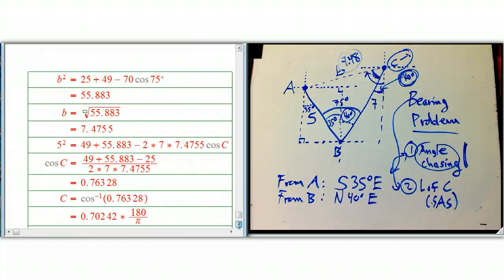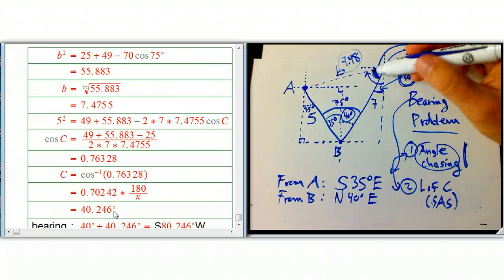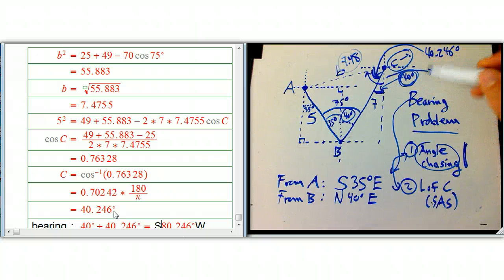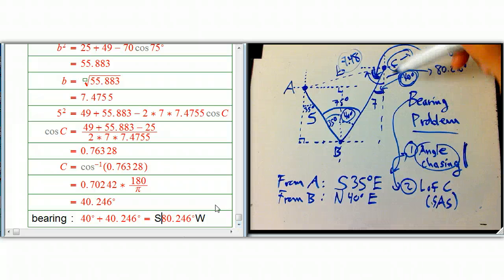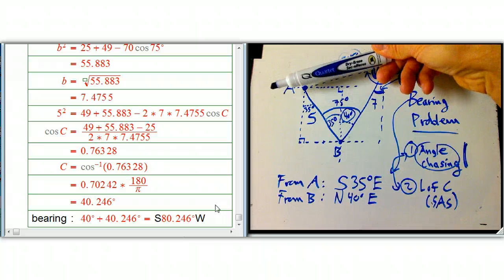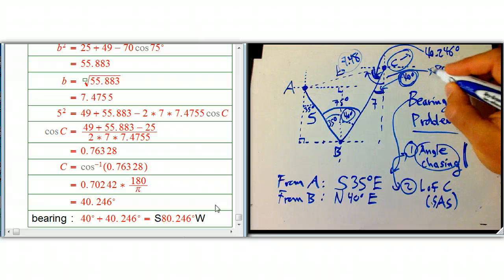Just simplify and take the inverse cosine. It gave the result in radians, so I converted to degrees — make sure you're in degree mode on your calculator. That gives 40.246 degrees for the angle inside the triangle at C. Then adding the 40 degrees we already knew gives 80.246 degrees total. Written as a bearing, that's south 80.246 degrees west — starting facing south, cranking way over almost 80 degrees toward the west, almost within 10 degrees of due west.